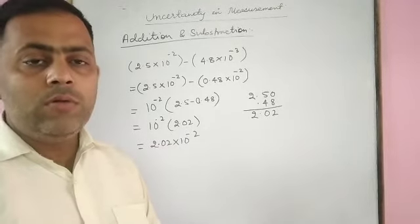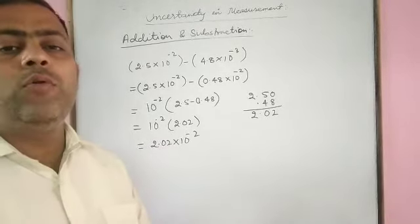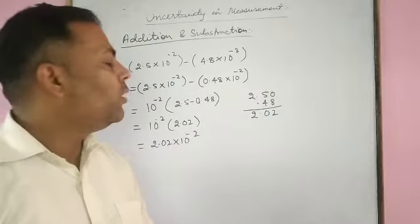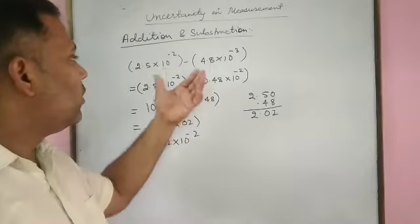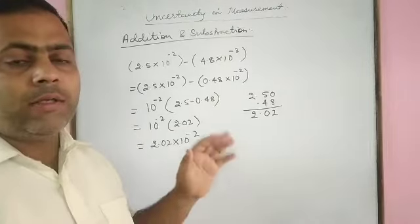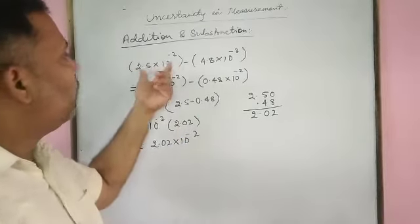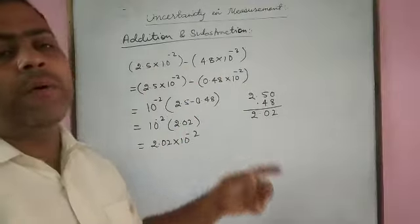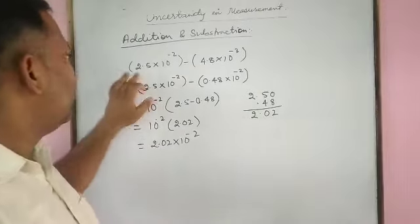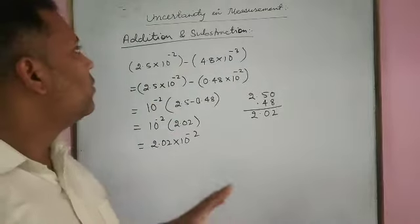To add or subtract using scientific notation: first, equate the exponential terms. Then, after equating, take the common exponent out, and perform the addition or subtraction on the digit terms.